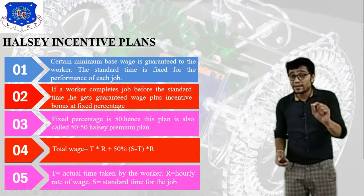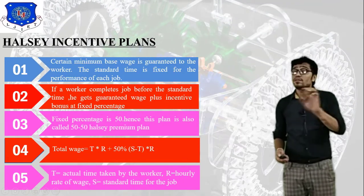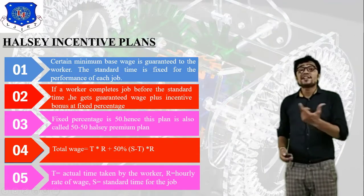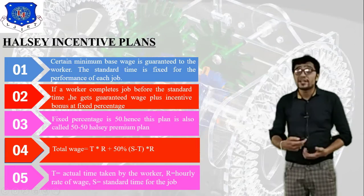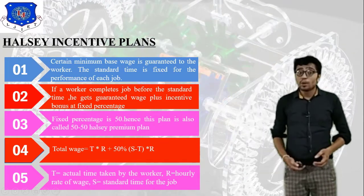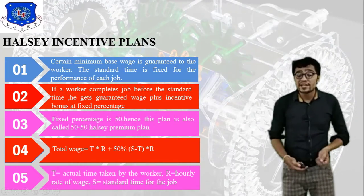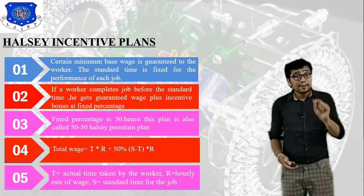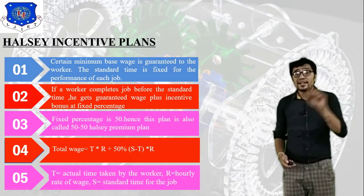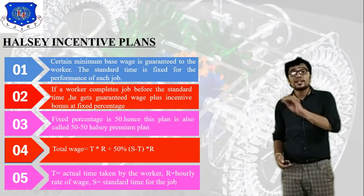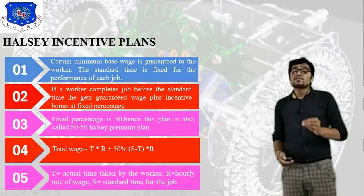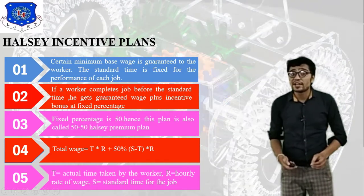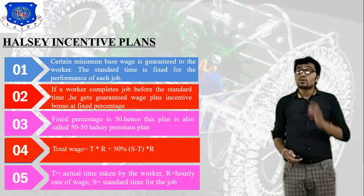So T = 1 minute and S = 2 minutes. Put all the values into the equation and you will get the total wage for the worker. Total Wage = T × R + 50% × (S − T) × R. Here the fixed percentage is 50. This is the Halsey incentive plan.